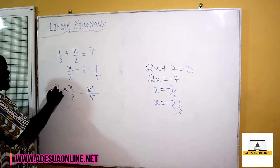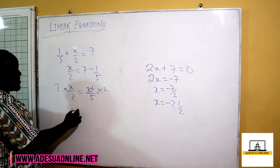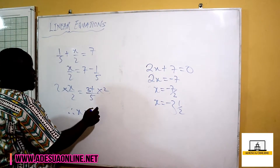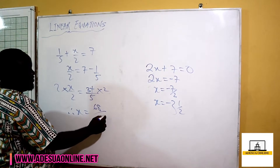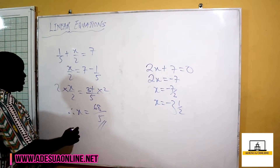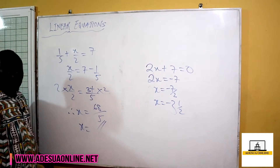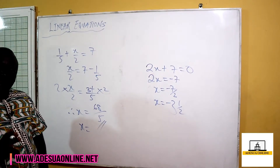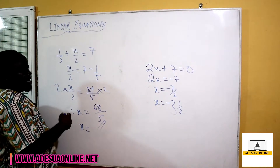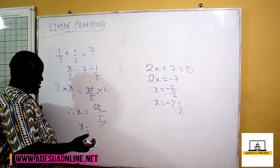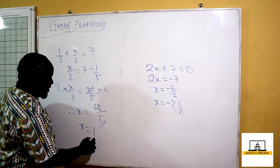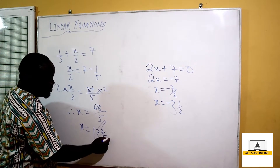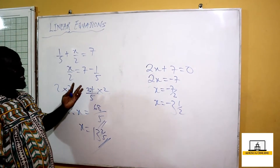Solving for x, we multiply both sides by 2, so x equals 34 times 2 over 5, which gives us 68 over 5. We should not leave the answer as an improper fraction, so we convert: 5 goes into 68 thirteen times with remainder 3, giving us 13 and 3 over 5. That is our solution.